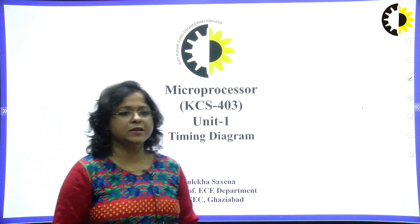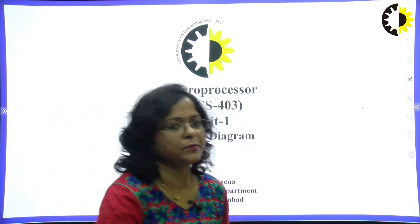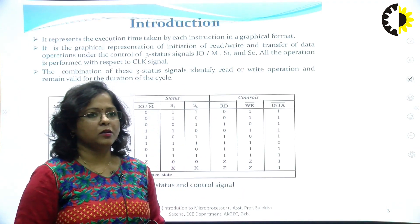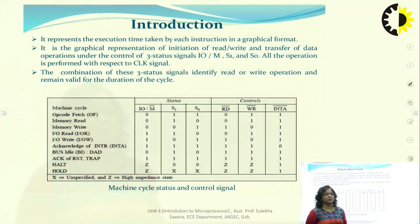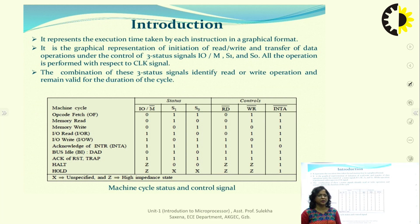What is a timing diagram? Timing diagram basically refers to the representation of execution time, or time taken by any operation, with respect to T states. A T state is basically one time period for a microprocessor. So, timing diagram is a graphical representation of various machine cycles done via microprocessor.